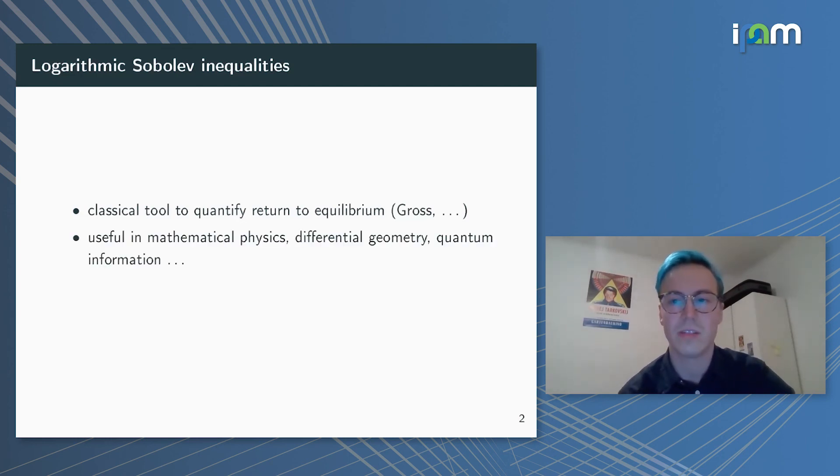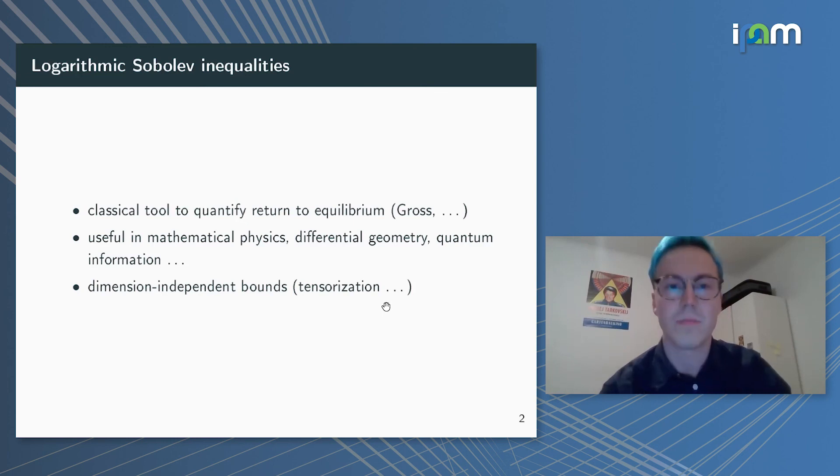They are a classical tool to quantify return to equilibrium. In the form I'll be using them here, they give you exponential decay of the entropy. As such, they are useful in mathematical physics, differential geometry, and quantum information. One distinctive property of several logarithmic Sobolev inequalities is that they give you dimension-independent bounds. Unlike the usual Sobolev inequalities where you have this dimensional constant, these here are dimension-independent. One way to express this is to say these satisfy some tensorization property.